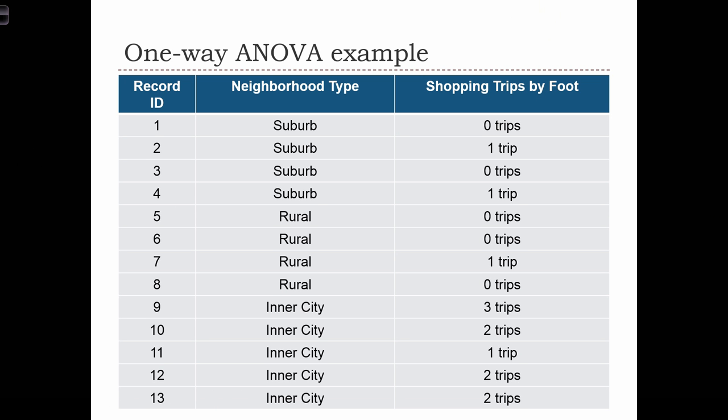Here we have an example of conducting a one-way ANOVA. In this sample, we've got 13 observations grouped into three different groups according to the neighborhood type that the person lives in. We've got suburban neighborhoods, rural neighborhoods, and inner city neighborhoods. Observations 1 through 4 live in the suburbs, 5 through 8 in the rural areas, and 9 through 13 live in the inner city.